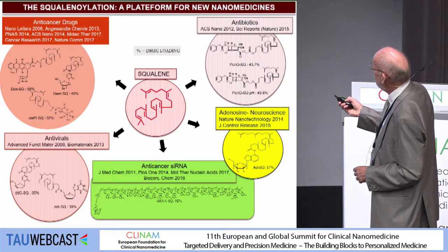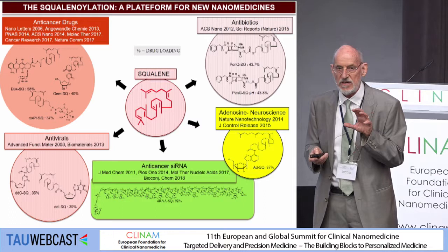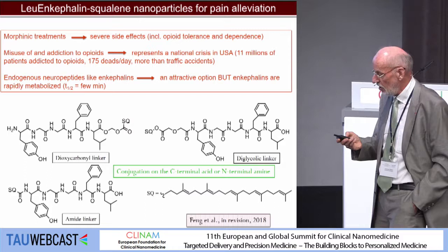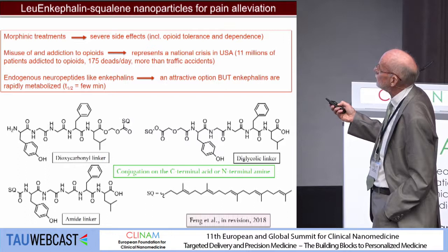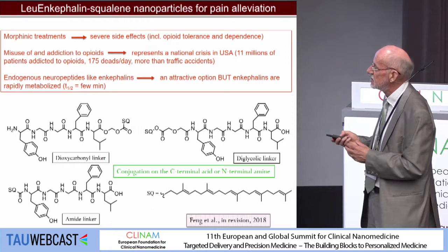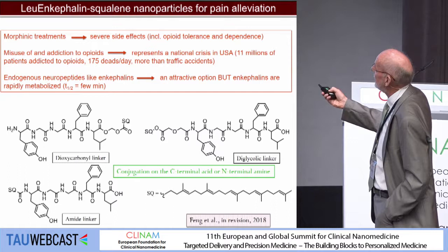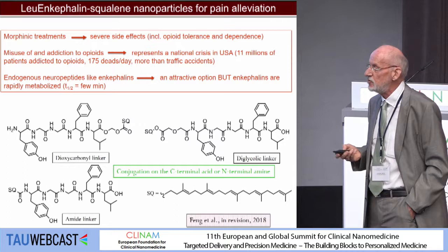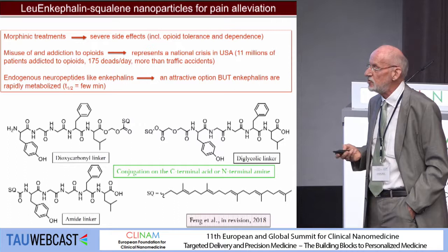There are also applications in the field of neuroscience, and I will concentrate on those today. The first application is very recent: pain alleviation. Opioids and especially morphinic treatments result in severe side effects, including pulmonary depression, opioid addiction, and opioid tolerance. The misuse and addiction to opioids represent a national crisis in the USA, with 11 million patients addicted and around 200 deaths per day — more than traffic accidents.